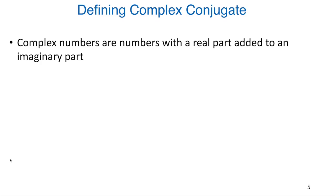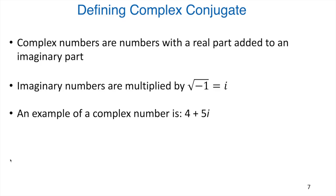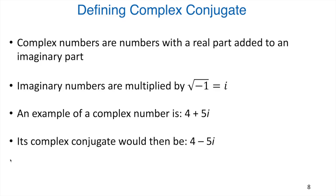One item worth talking about is defining a complex conjugate, because we need that for today. Complex numbers are numbers that have a real part added to an imaginary part. Imaginary numbers are numbers multiplied by the square root of negative one, which we call i. For example, the complex number 4 + 5i has a real part of 4 and an imaginary part of 5i. The complex conjugate of 4 + 5i is just 4 − 5i — you take the imaginary part and multiply it by negative one. And it goes the other way too: the complex conjugate of 4 − 5i is 4 + 5i.